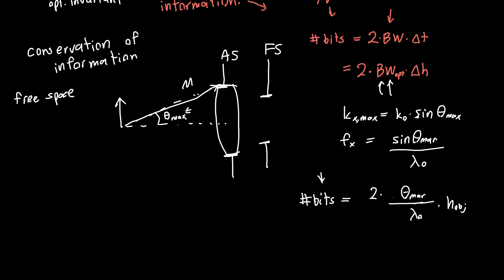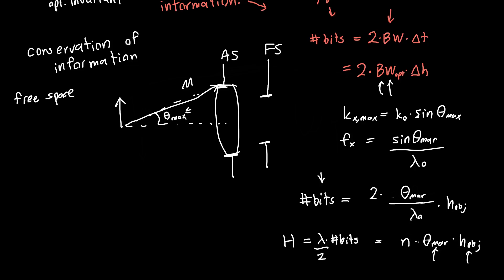This is just about the Lagrange invariant. The Lagrange invariant H is lambda times the number of bits — or more precisely lambda over two times the number of bits — which works out to theta_marginal times the object height. We can also include the ambient refractive index. The most important thing about H is that it's conserved: it doesn't change as you propagate through an optical system. This specific form applies at the object plane or equivalently the image plane.